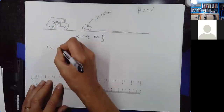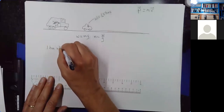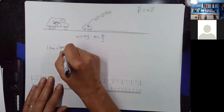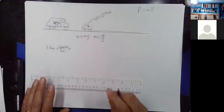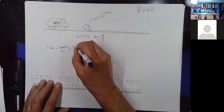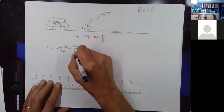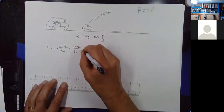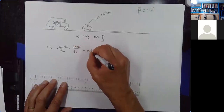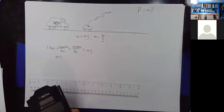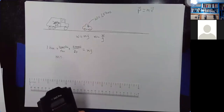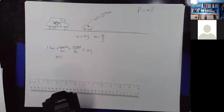We could do this: one ton times 2,000 pounds per ton, times 4.448 Newtons per pound, equals the mass times the acceleration due to gravity. We can figure out the mass of one ton, and that should work out okay — always works better if I turn on my calculator first.